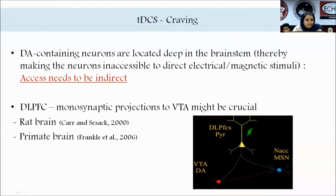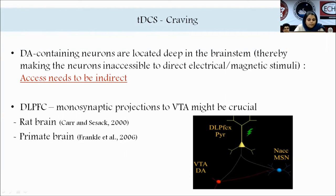For tDCS in craving: dopamine-containing neurons are located deep in the brainstem and are difficult to access directly. However, the dorsolateral prefrontal cortex has monosynaptic projections to the ventral tegmental area. So through stimulation of the DLPFC, we can indirectly modulate the reward pathway and craving via these monosynaptic projections to the ventral tegmental area.